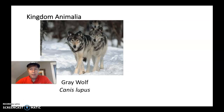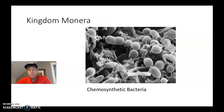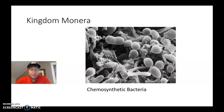We'll talk more about how we categorize animals as we get further down into a specific species, but this is just one example of a living thing in the kingdom animalia. Kingdom Monera, like I mentioned, is the bacteria. Bacteria are living things that can make us sick sometimes, but they actually live inside our bodies and make us healthy in a lot of ways. This is a picture of a chemosynthetic bacteria, which actually uses chemicals to survive.